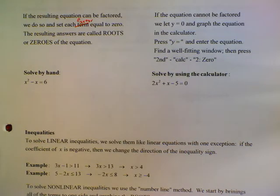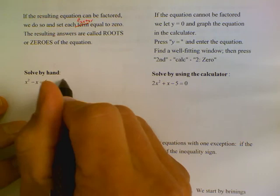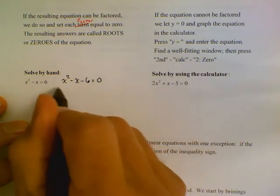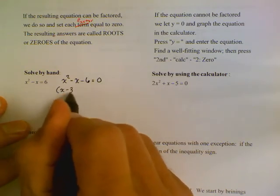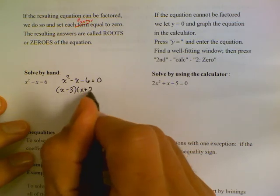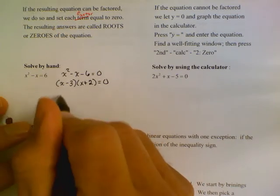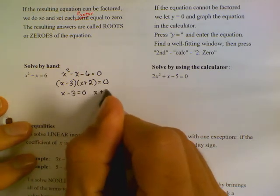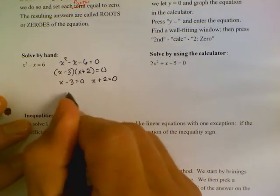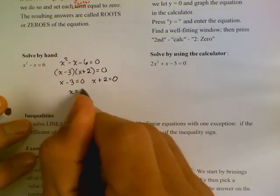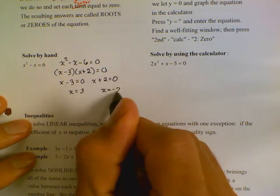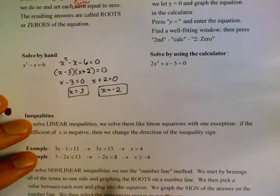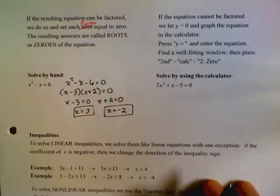This first equation says to solve by hand. So we're going to say that x squared minus x minus 6 equals 0. We're going to factor and say that (x minus 3) times (x plus 2) equals zero. We use the zero product property and set each factor equal to zero, giving us x equals 3 and x equals negative 2.